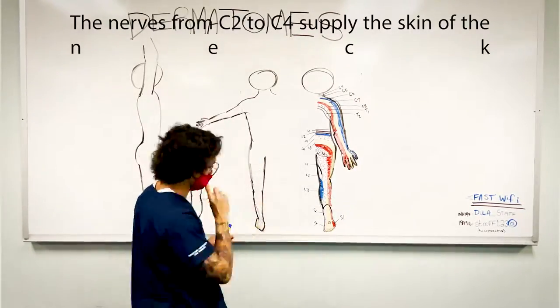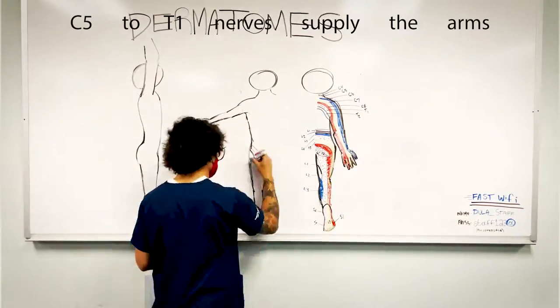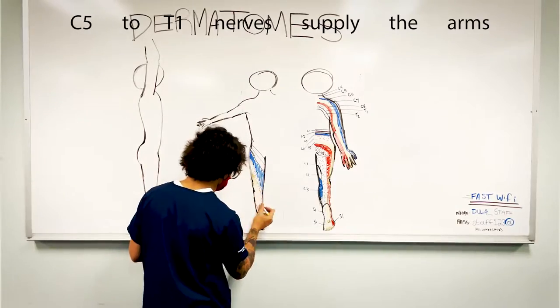The nerves from C2 to C4 supply the skin of the neck. C5 to T1 nerves supply the arms.